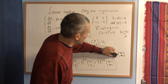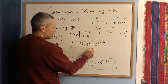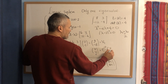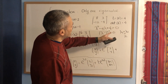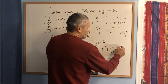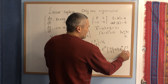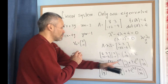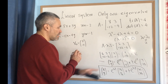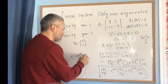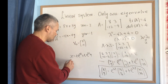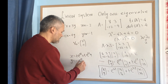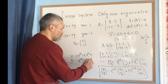Now we can write the solution. According to the formula, (x, y) = e^(2t) · (2, -1) + t · e^(2t) · (9, -18). Separating the components: x = 2e^(2t) + 9t·e^(2t), and y = -e^(2t) - 18t·e^(2t).